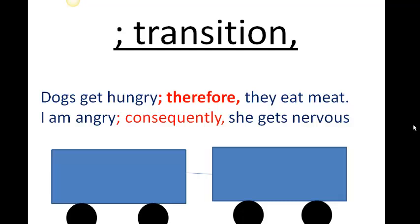The other option is to use a semicolon, transition word, and a comma. For example: 'Dogs get hungry; therefore, they eat meat.' 'I am hungry; consequently, she gets nervous.' In both examples, I've connected two independent clauses using a semicolon, transition word, and a comma.